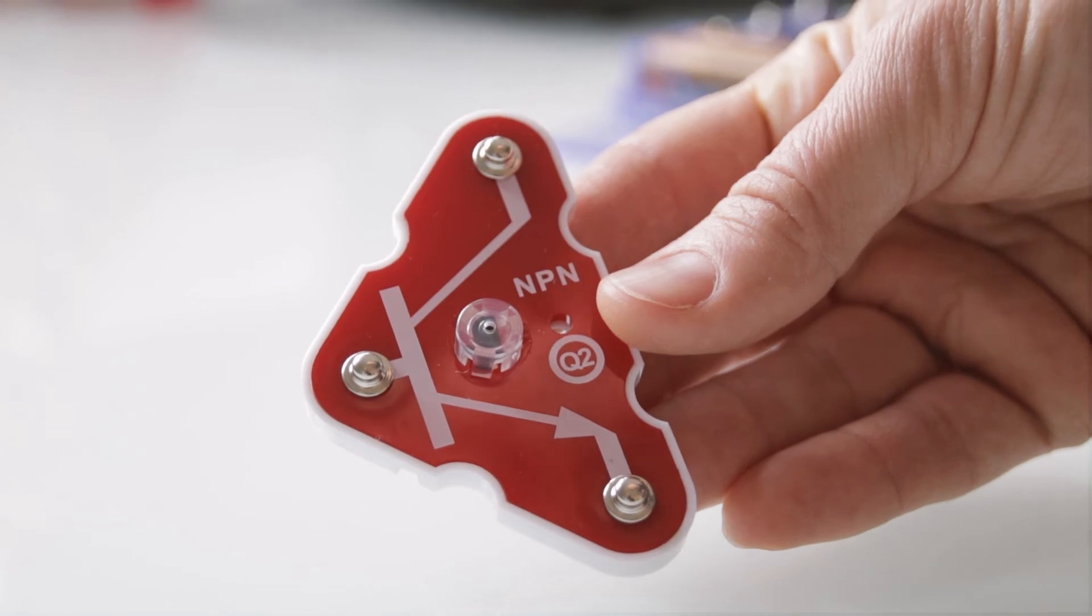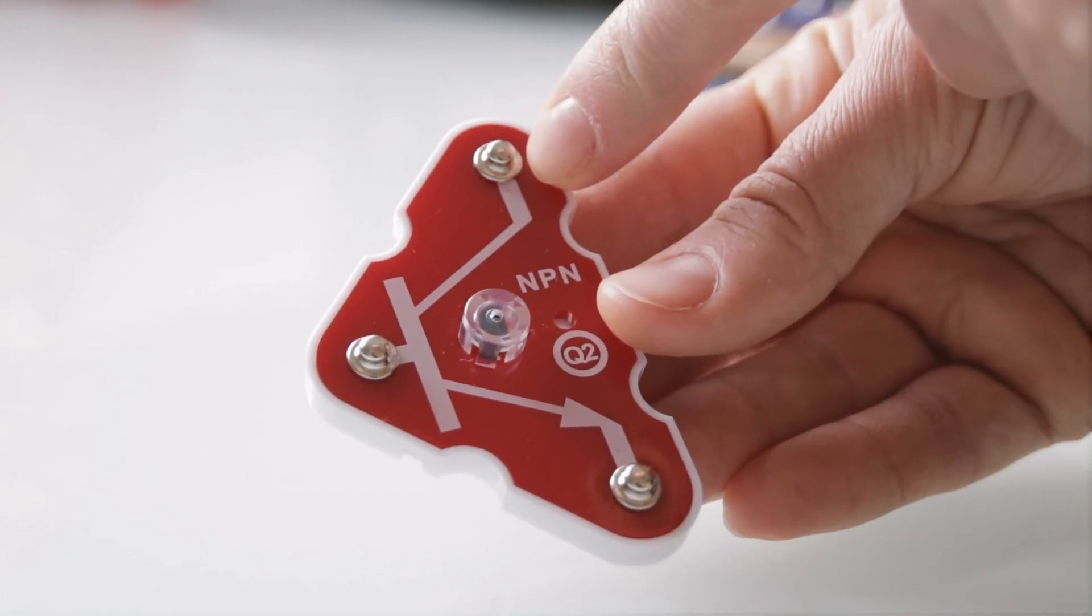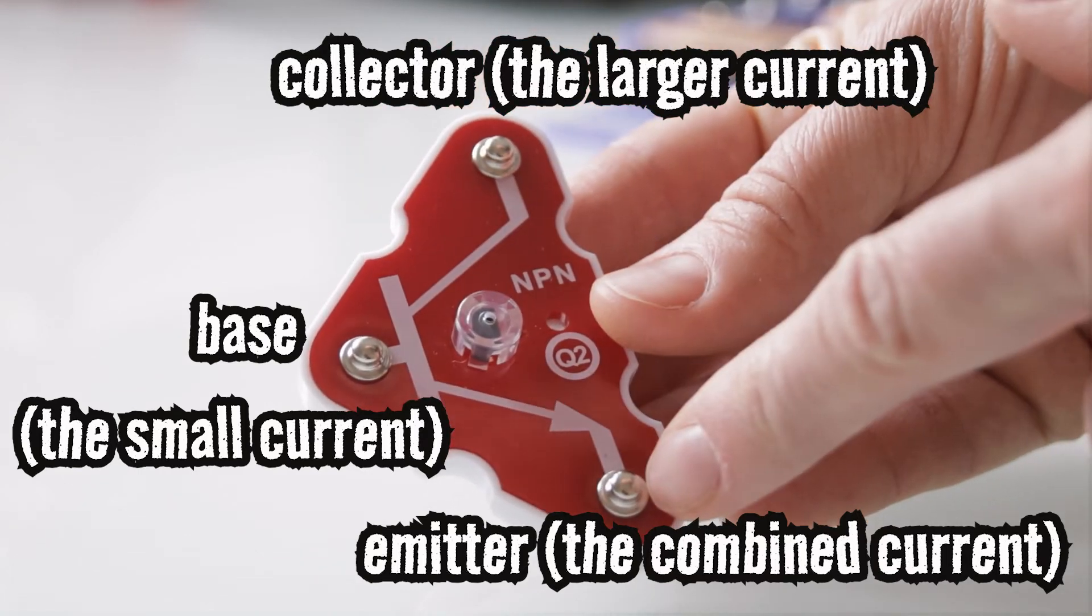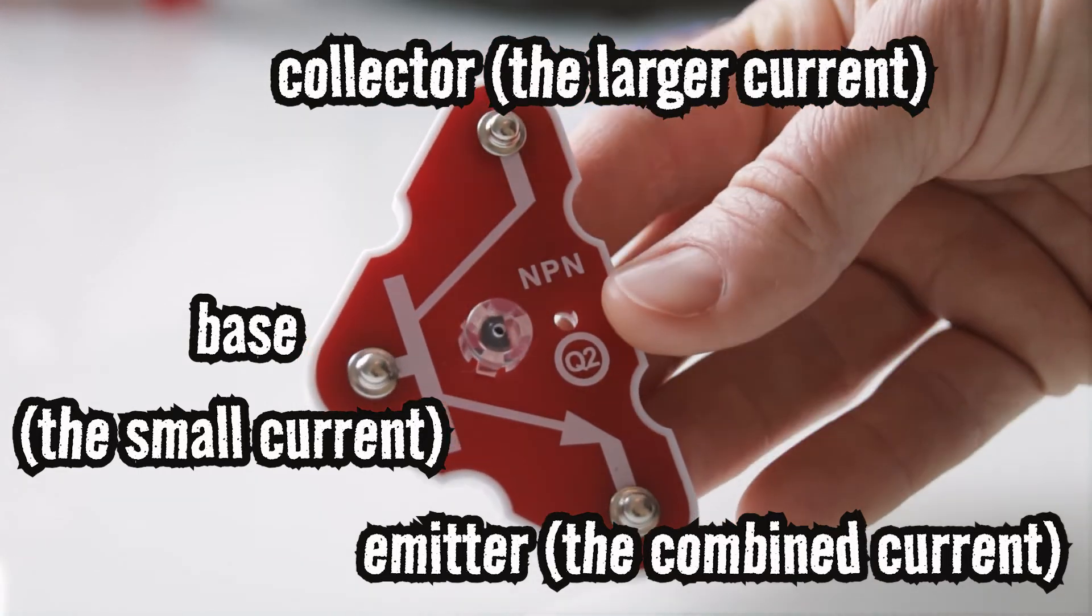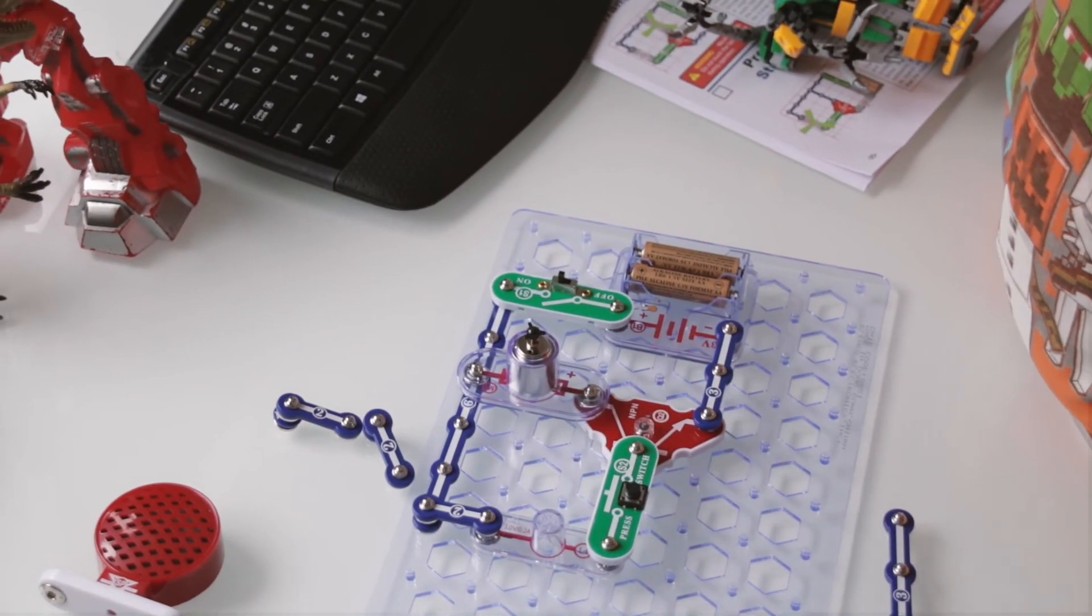Transistors use a small current to control a large current and have three connection points: the larger current, the small current, and the combined current. Press it and fly!